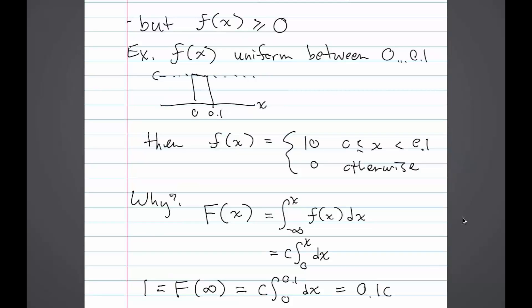Here's one example where little f of x can be bigger than 1. Let's say little f of x is uniform between 0 and 0.1. That means if you try to sample from this random variable x, you'll always get a value between 0 and 0.1 and the probability of any particular value is equal to all the others.